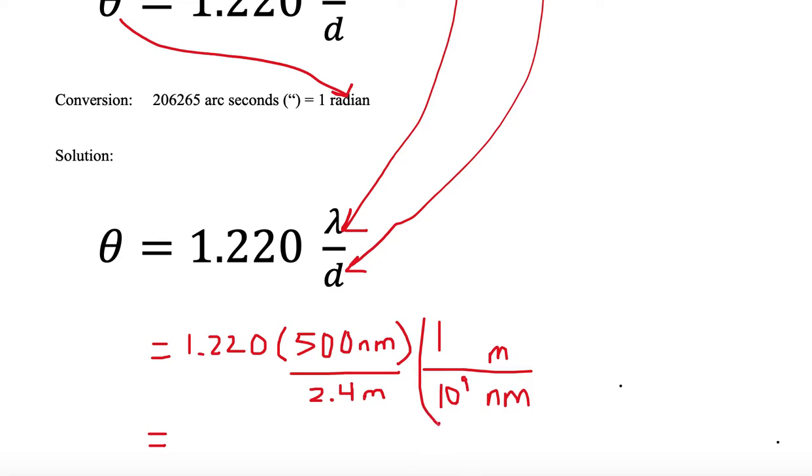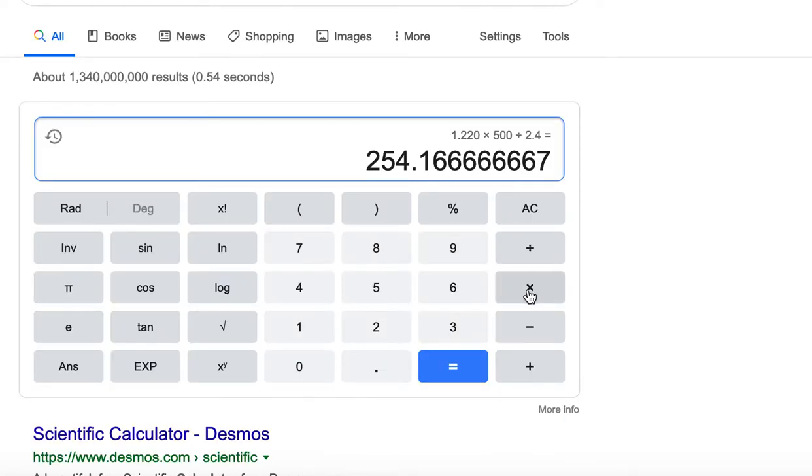So we need to multiply by 1 and then divide by 10 to the 9th. Let's go ahead and multiply by 1 and divide by 1 EE 9, because 10 to the 9th is the same on the calculator as 1 EXP 9. We hit the equal sign and we have a value of 2.54 times 10 to the minus 7th.